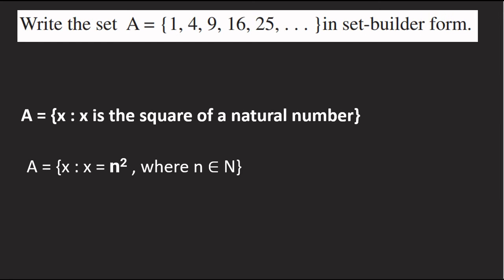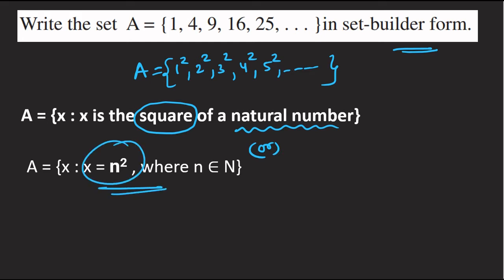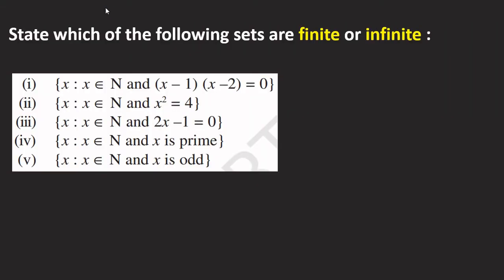For example, {1, 2, 3, 4, 5} — these are natural numbers. Here n belongs to capital N, and capital N is nothing but the set of natural numbers. This is the representation in set builder form. Now we need to find whether a set is finite or infinite.